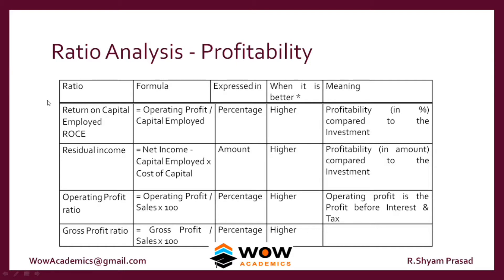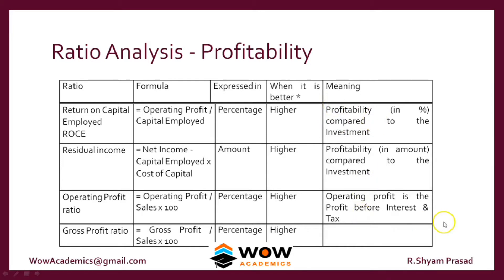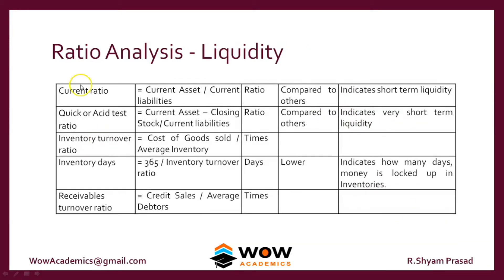We have profitability ratios in terms of ROCE, residual income, operating profit, and gross profit. These are the formulas for each, and all of them should be higher — the table also expresses what is better for each one.